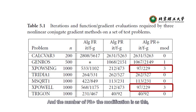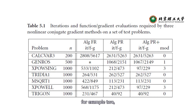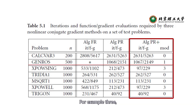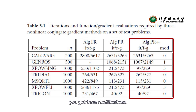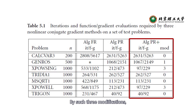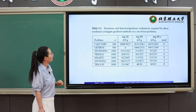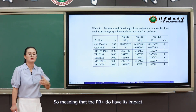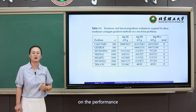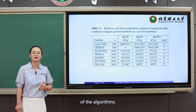The number of PR-plus modifications is as shown: for example two, there is one modification, and for example three, there are three modifications. By such modifications, the number of iterations and number of function evaluations are significantly reduced, meaning that PR-plus does have a meaningful impact on the performance of the algorithm.